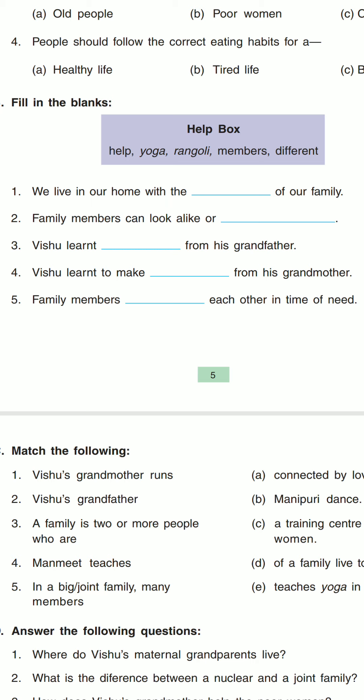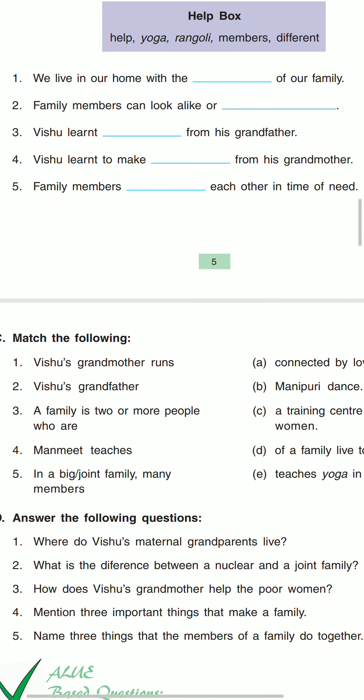Second question: family members can look alike or different. The answer will be 'different.' Then in the third question: Vishu learned — from his grandfather. Vishu learned yoga. The answer will be 'yoga.' Vishu learned yoga from his grandfather.